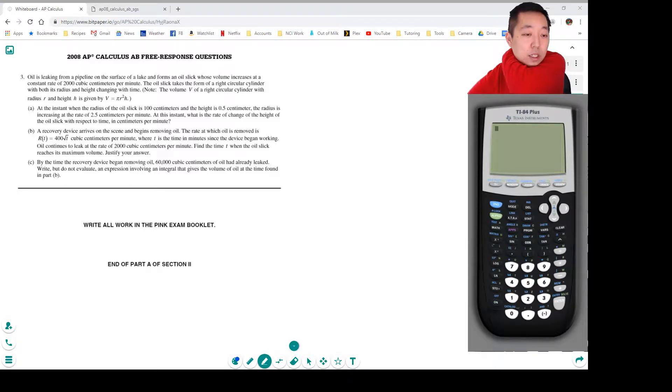At the instant with the radius of the oil slick, let's write everything that we have. We have V equals pi R squared H, and they're saying that dV/dt, the rate of change of the volume, is 2,000 cubic centimeters per minute.